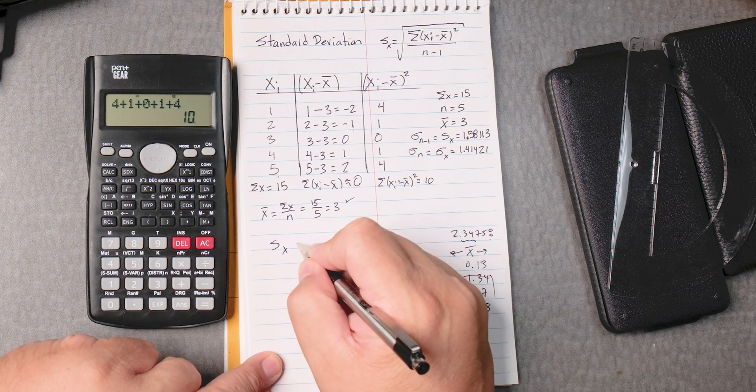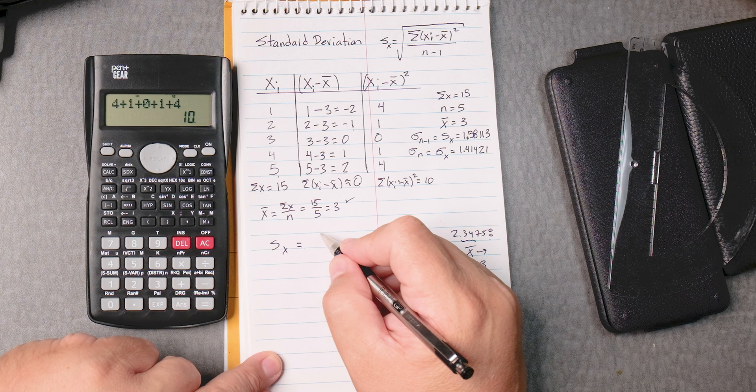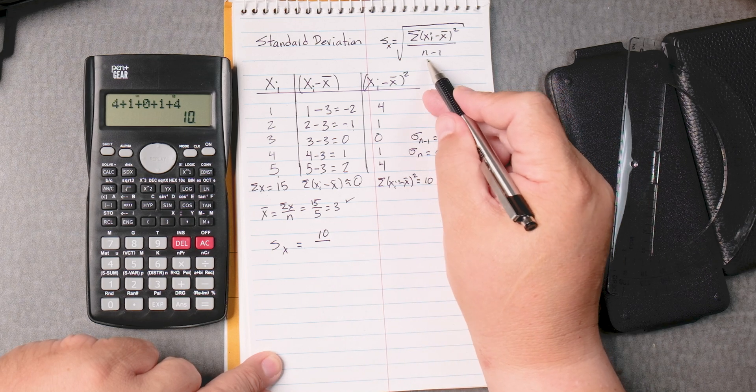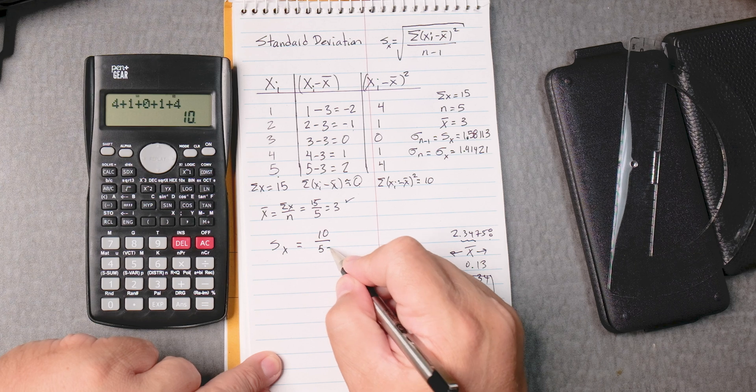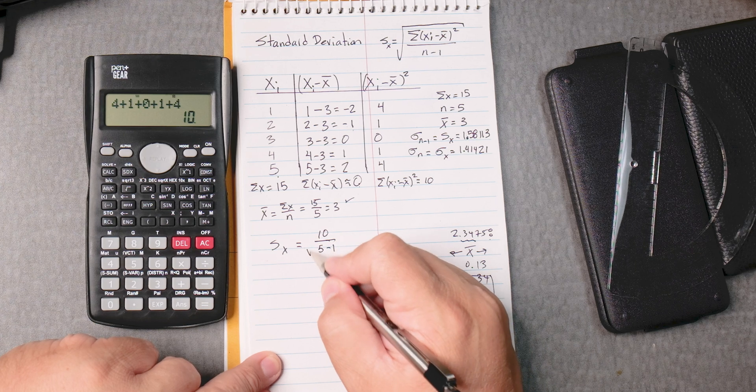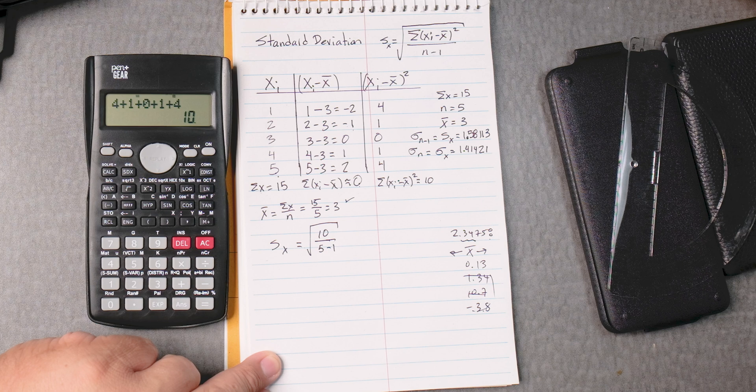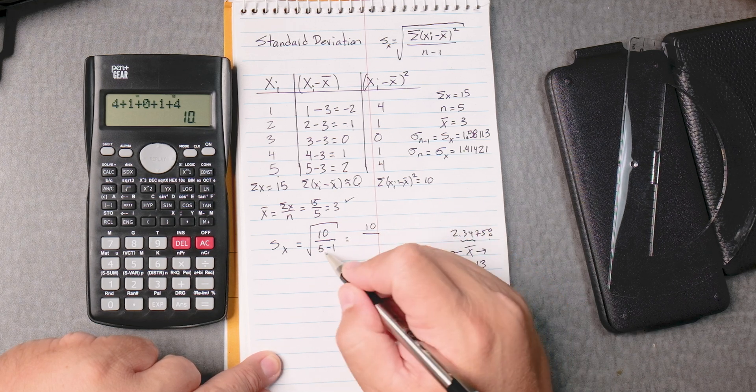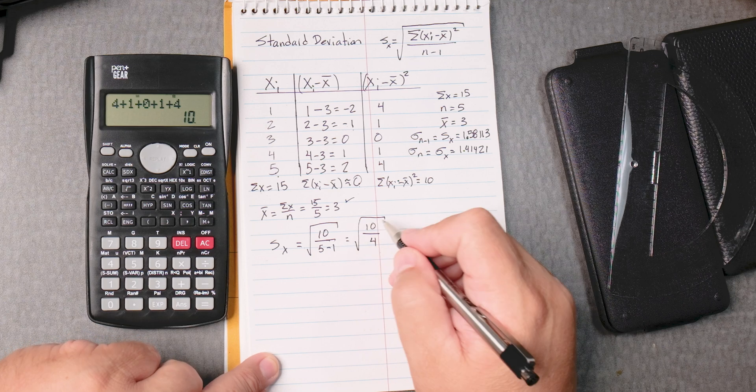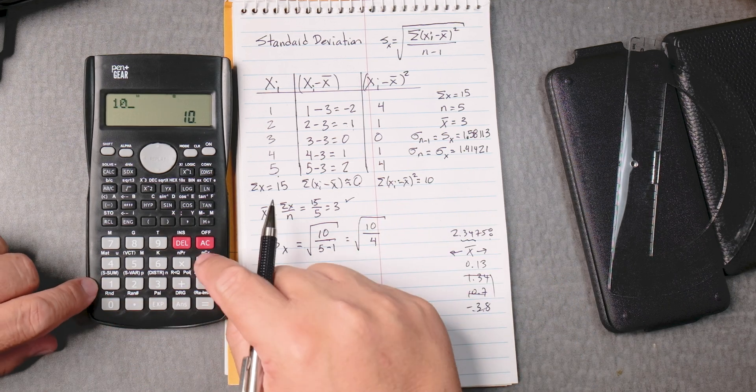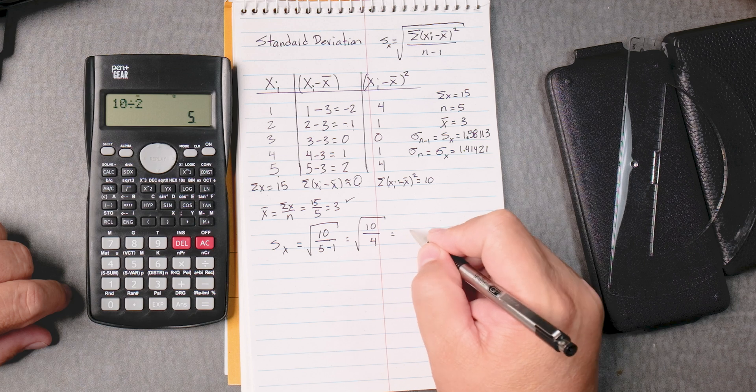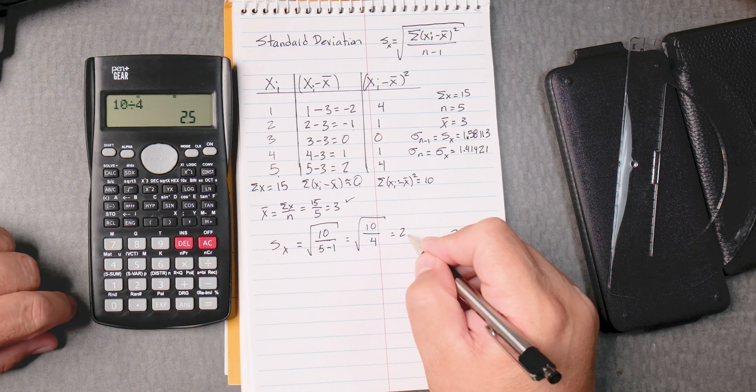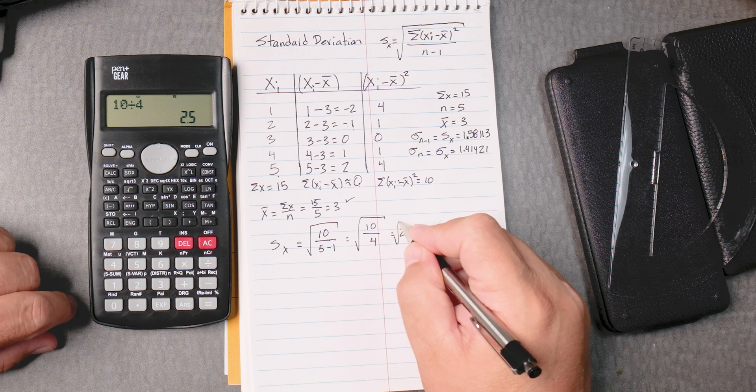So Sx equals, it's going to be 10 divided by n minus 1, n is 5. The calculator even told us that. Take away 1, which is our correction factor. Always take away 1 for a sample standard deviation. Then that's 10, and then that's 4. Take the square root, don't forget to take the square root. 10 divided by 2 is 5, no, 10 divided by 4, I meant, is 2.5. Okay, that happens. We got that right, square root of 2.5.